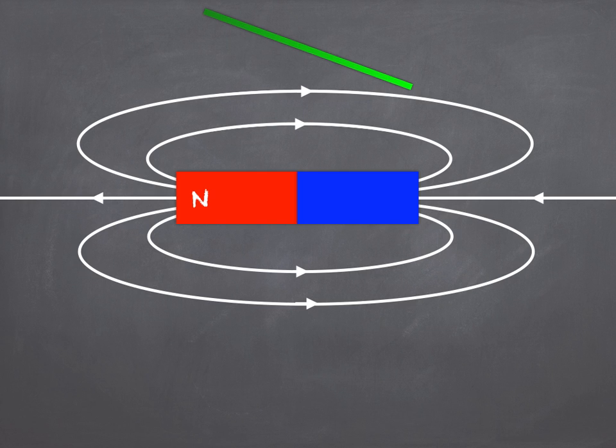If you get a conductor like a wire and you move it through the magnetic field so it cuts through the flux lines, then something very useful happens. Electrons in the wire will get pushed to one end and that makes one end of the wire positive and one negative.